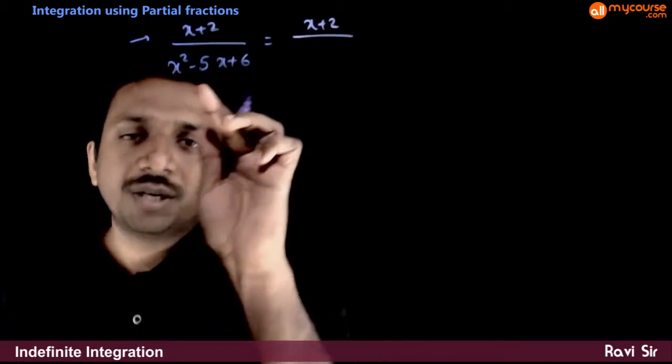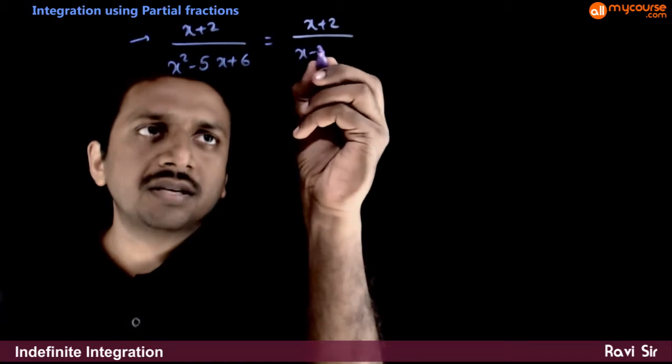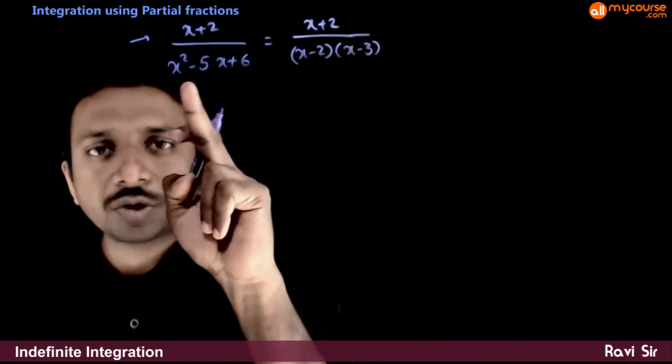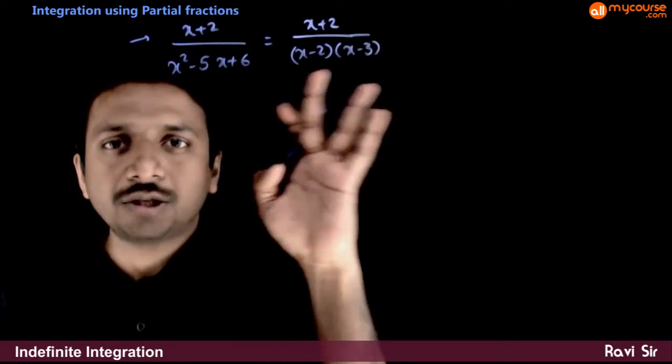This is a very easy expression, so let us factorize it directly. x square minus 5x plus 6 is x minus 2 into x minus 3.